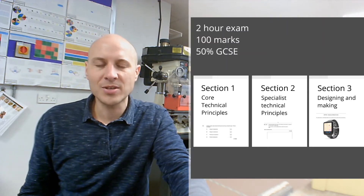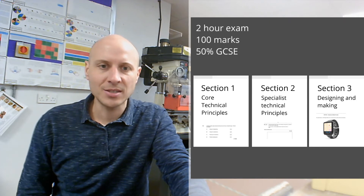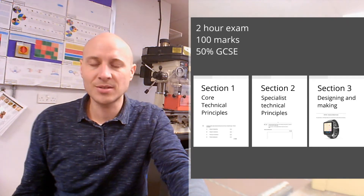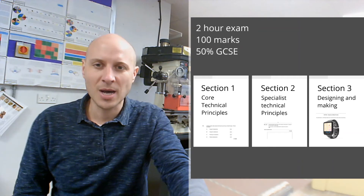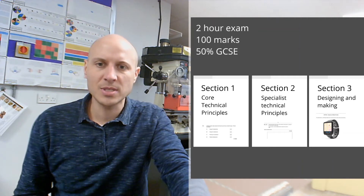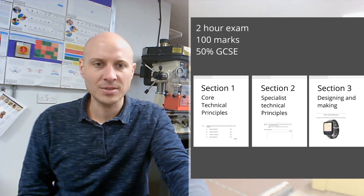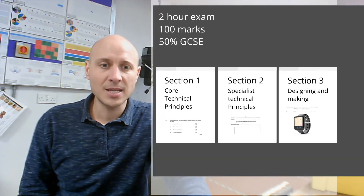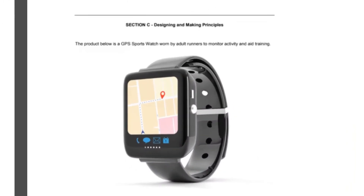Section 2 looks at more specialist technical principles — more questions about resistant materials and different types of materials. Section 3 is the designing and making section, where you'll be asked to design a product and talk about how you would make it using manufacturing processes.